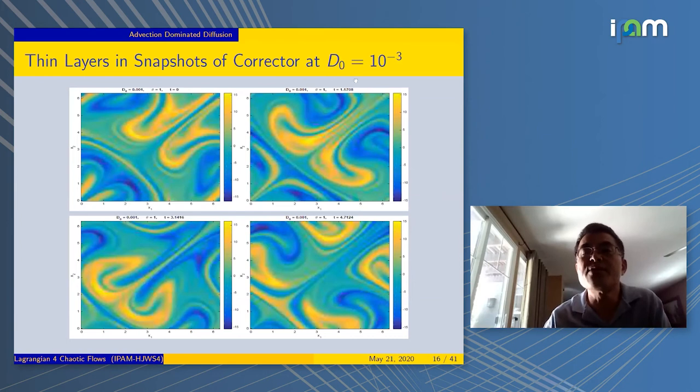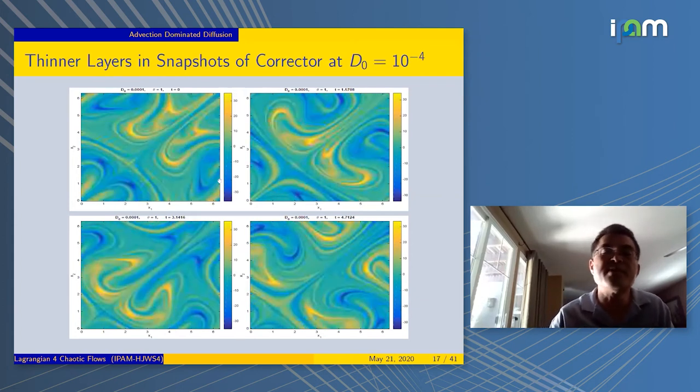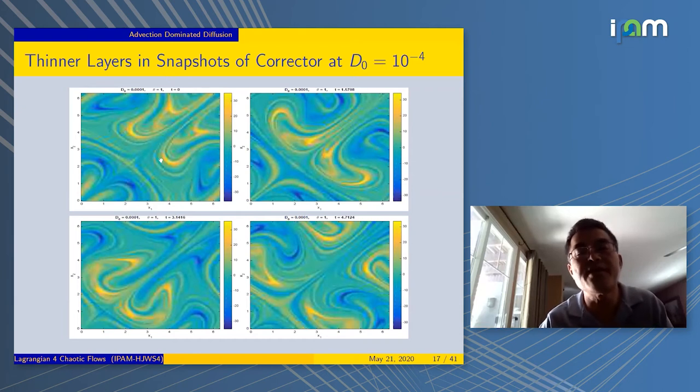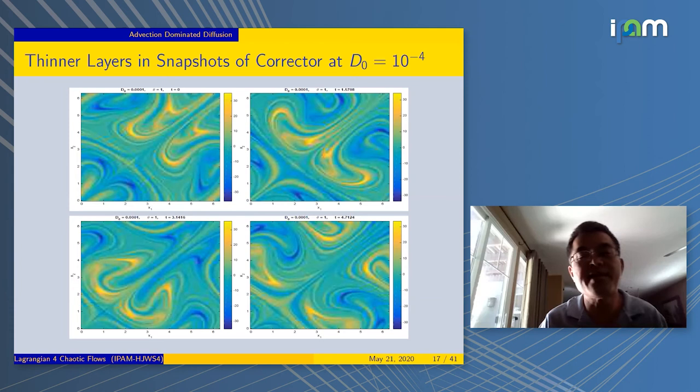But what does the corrector look like? At D_0 equals 10^-3, I show you four snapshots. You see the layer structures start to form as small D_0 across different times. Similarly, if you go to 10^-4, you see similar structures. Only the layers get thinner and thinner. In other words, you get sharp gradients.